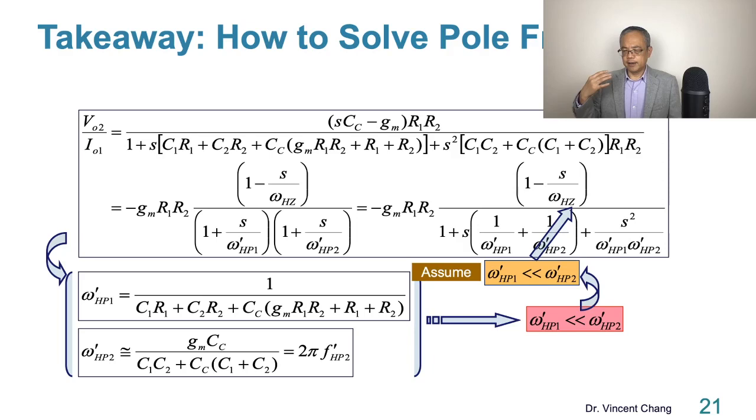All right. So the key major takeaway of this lecture: how to solve the pole frequency. We assume this and we get this and go back to support the original assumption. We use the self-consistent technique. But unfortunately, when it comes to real problem solving, with this kind of knowledge sometimes it's still not enough. That's why I designed the third lecture around Miller compensation and focus on problem solving. I'm going to show you a design example, how to really apply this to tackle a design problem. So this is the lecture I'm going to teach you in the next one. Thanks for watching.